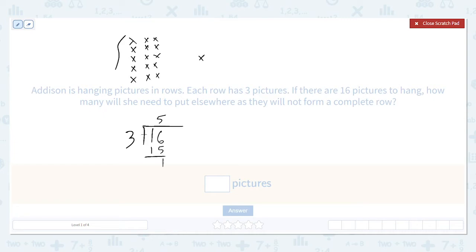Five complete rows, right, with a remainder of one. That remainder tells us how many are left over. So in this case, it's going to be one picture.